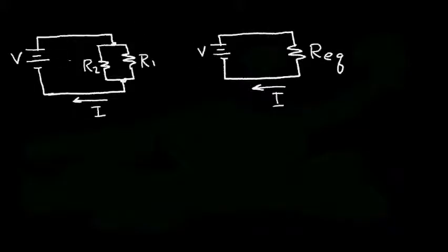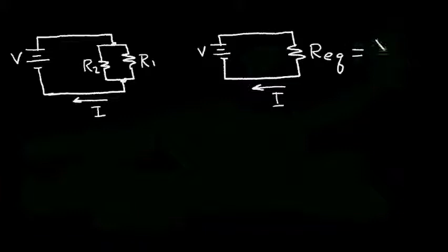Now let's consider two resistors in parallel. The circuit on the left has resistor R2 in parallel with resistor R1. The circuit on the right is exactly the same except it has one equivalent resistor — that is the equivalent to the parallel combination of R1 and R2 — and we call that R Eq. We know from Ohm's Law that R Eq is the voltage across the resistor divided by the current through the resistor.